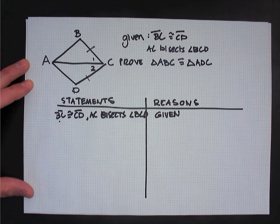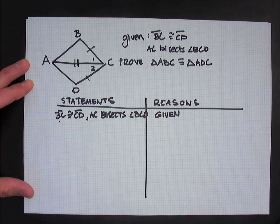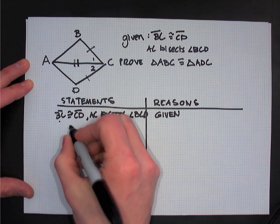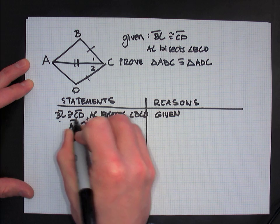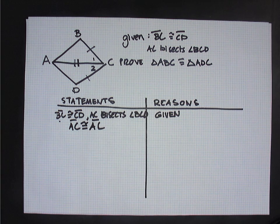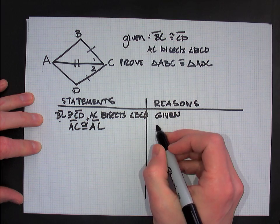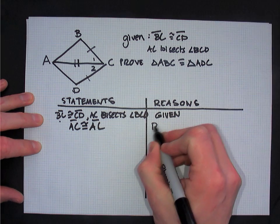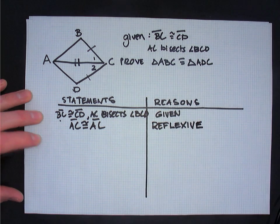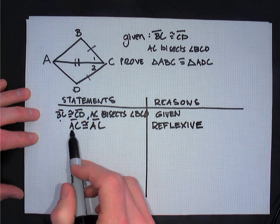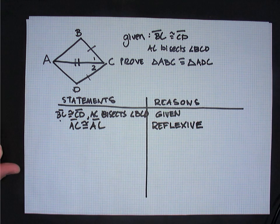I can see that side AC is shared between the two triangles, so AC is congruent to itself. I'll write: side AC is congruent to side AC. The reason is the reflexive property — recall that the reflexive property states something like A equals A, meaning something is equal to itself. In this case, AC is congruent to AC. So we now have two pairs of congruent sides.